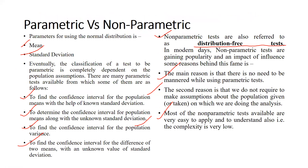For parametric tests, the parameters used with the normal distribution are mean and standard deviation. But in the case of non-parametric tests — since it is distribution-free — we use only the median. The classification of a test as parametric is completely dependent on the population assumptions. There are many parametric tests, including: finding the confidence interval for the population mean with known standard deviation, determining the confidence interval with unknown standard deviation, finding the confidence interval for population variance, and for the difference of two means with unknown standard deviation.